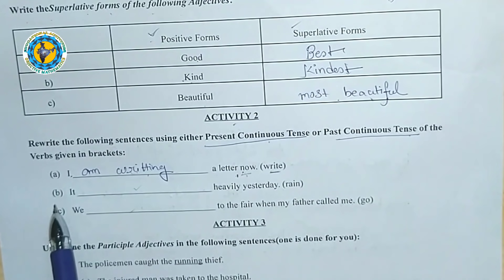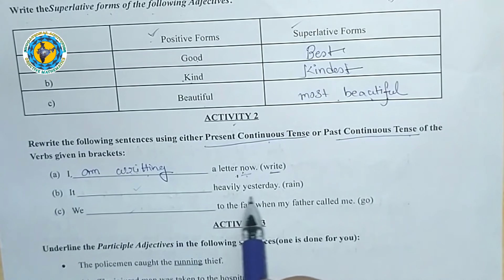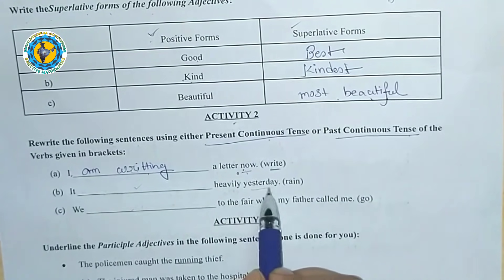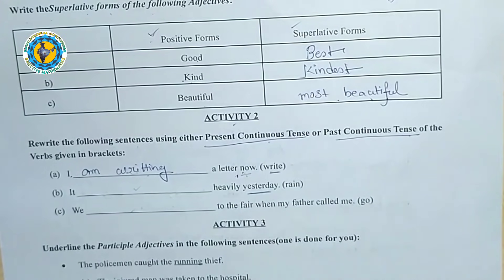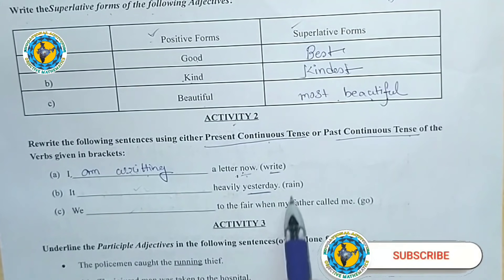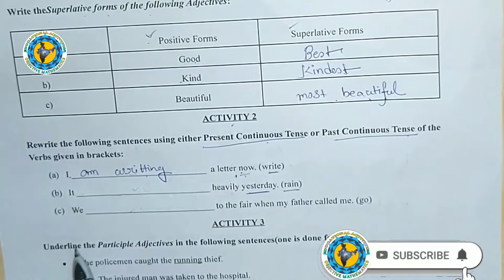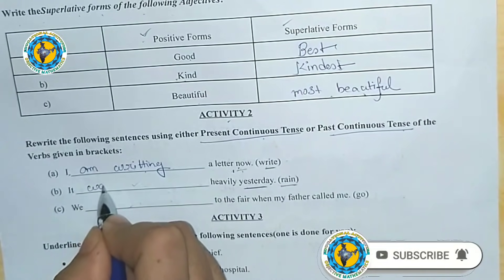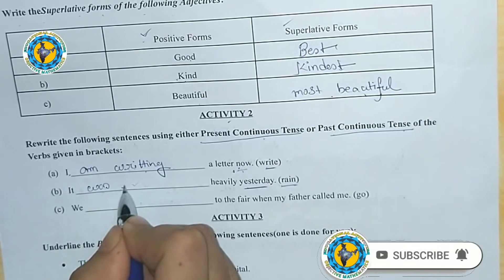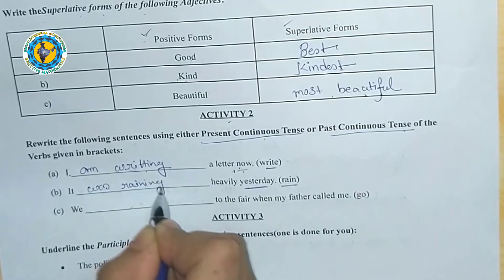Next sentence: 'It dash heavily yesterday.' The word 'yesterday' means 'goto kaal,' indicating past tense. So we use past continuous tense. The answer is: 'It was raining heavily yesterday.'